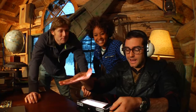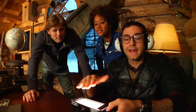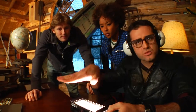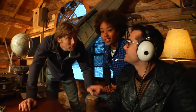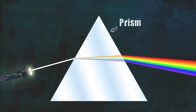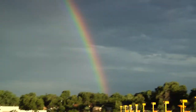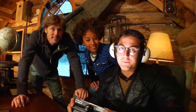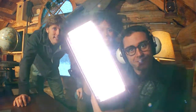So we know that light is a form of energy and it travels as waves. Light can be absorbed, reflected, or refracted. We can see light waves being refracted every time we see a rainbow. So never stop exploring your world!